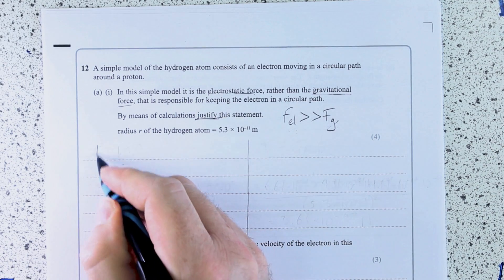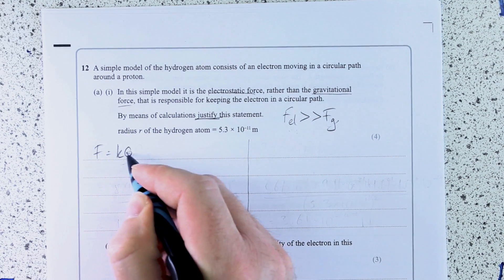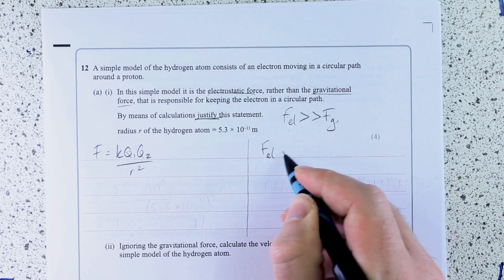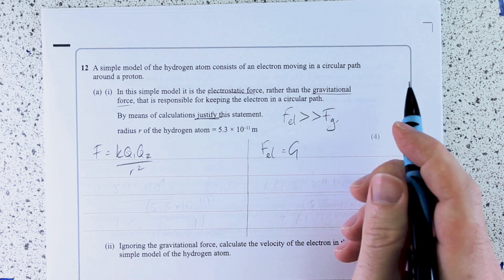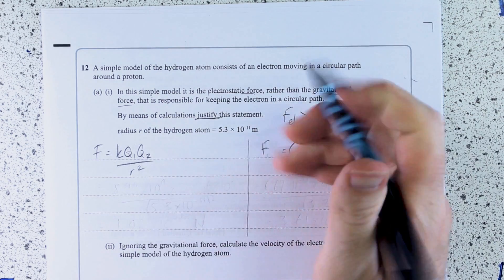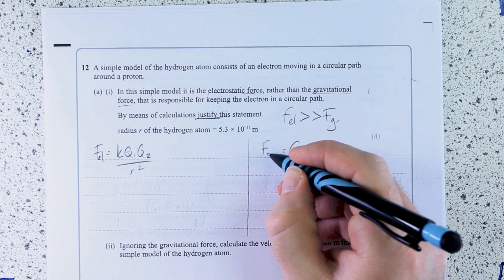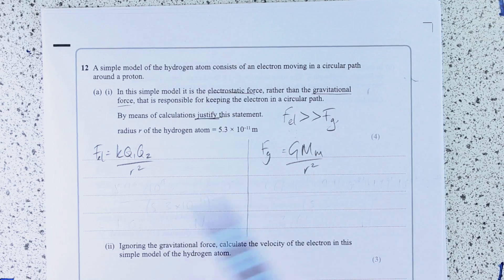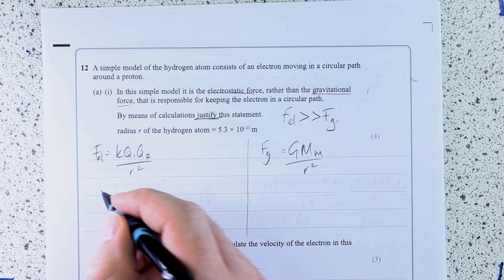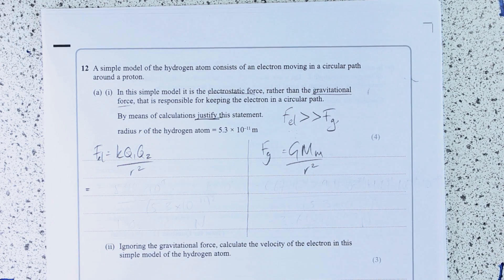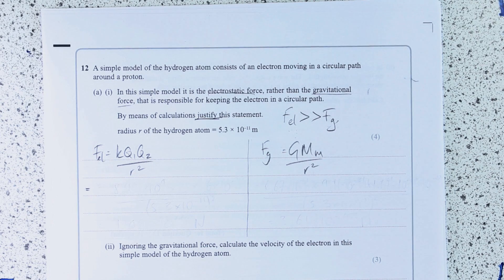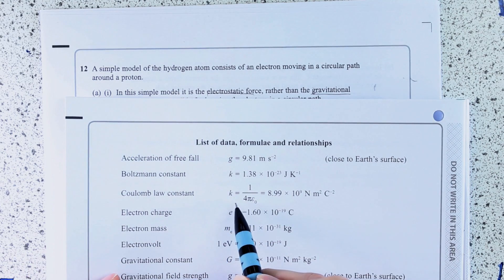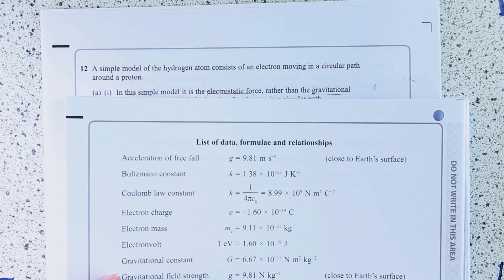So I'll do the Coulomb's law force over here and the gravitational force over here. You can do this by ratios, and I'll just do that at the end. K is in our datasheet as the Coulomb law constant, 8.99 times 10 to the 9.